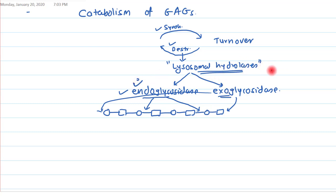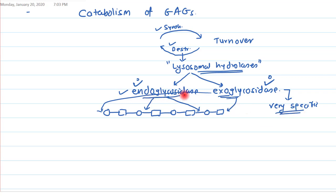Endoglycosidases are ubiquitous in lysosomal hydrolysis, but exoglycosidases are very specific — for N-acetylglucosamine there will be a different exoglycosidase, for glucuronic acid a different one, and so on. Endoglycosidase deficiency is almost never seen, whereas exoglycosidase deficiency does occur because they are very specific.